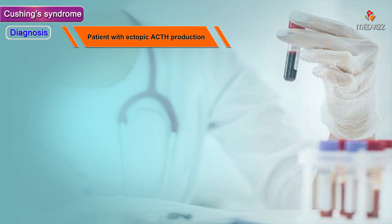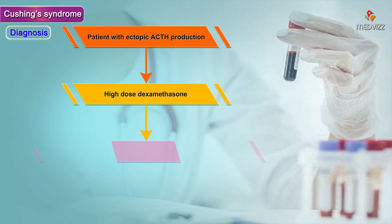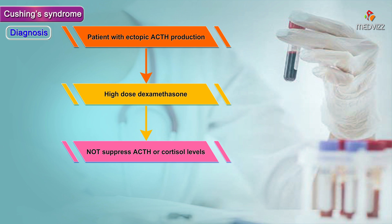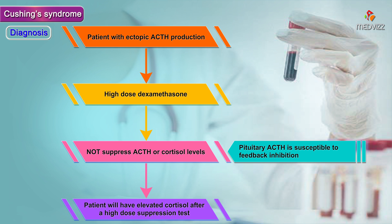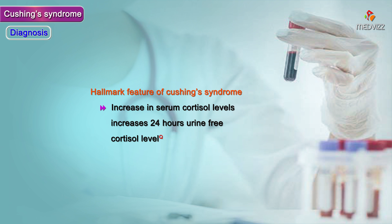High dose dexamethasone will suppress the body's endogenous ACTH and cortisol production by negative feedback. In a patient with ectopic ACTH production, high dose dexamethasone will not suppress ACTH or cortisol levels because only pituitary ACTH is susceptible to feedback inhibition. Thus, this patient will have elevated cortisol after the high dose suppression test. The hallmark feature of Cushing's syndrome is increased cortisol levels and increased 24-hour urine-free cortisol levels.